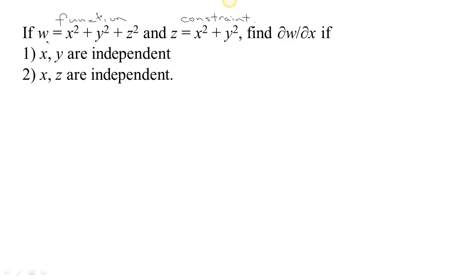The partial derivatives of w actually depend on how you think about this constraint. One way is that z is the dependent variable, so x and y are independent — once you've chosen x and y, z is fixed. Another way is that z and x are independent, so this constraint fixes what y has to be, or that z and y are independent and x depends on them. Depending on how we think about it, we get different answers for the partial derivative of w.